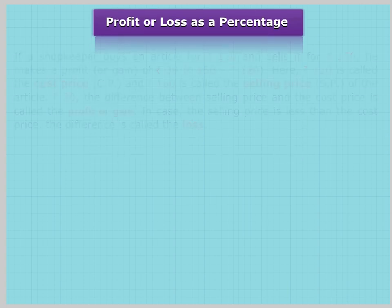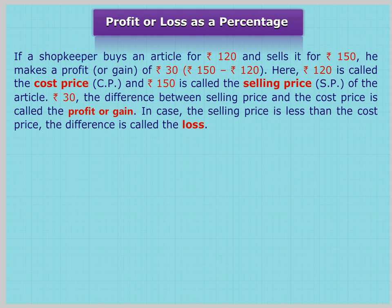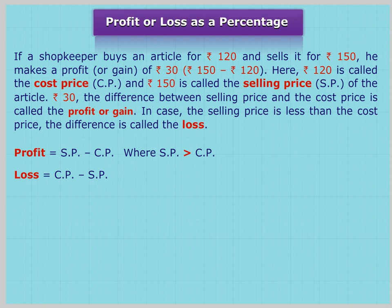Profit or Loss as a Percentage: If a shopkeeper buys an article for Rs. 120 and sells it for Rs. 150, he makes a profit or gain of Rs. 30 (Rs. 150 minus Rs. 120). Here, Rs. 120 is called the cost price (CP) and Rs. 150 is called the selling price (SP) of the article. Rs. 30, the difference between selling price and cost price, is called the profit or gain. In case the selling price is less than the cost price, the difference is called the loss. Profit = SP minus CP, where SP is greater than CP. Loss = CP minus SP, where CP is greater than SP.